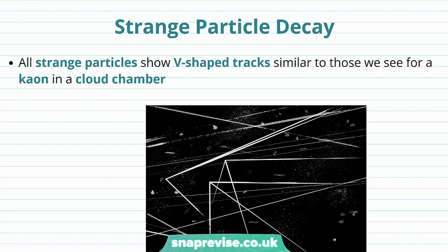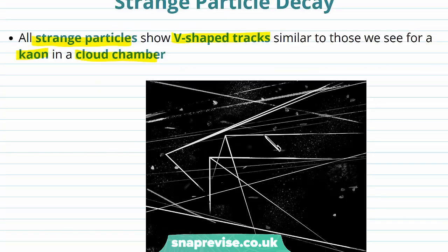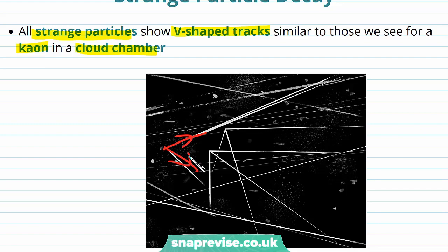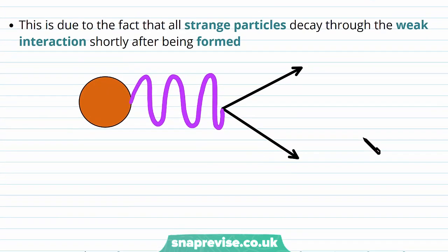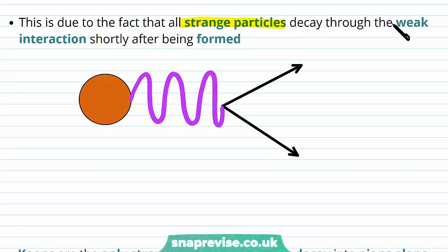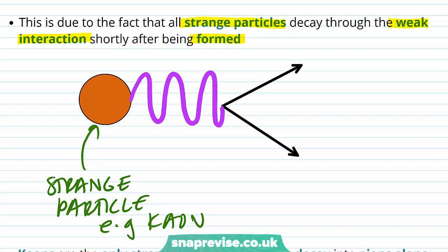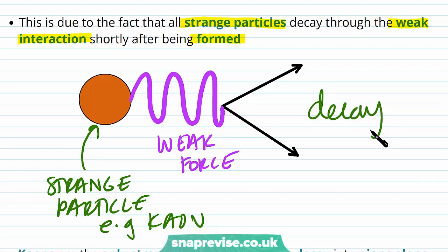Strange particles are formed via the strong force and then decay via the weak interaction. All strange particles show V-shaped tracks similar to those seen for a kaon in a cloud chamber. This is due to the fact that all strange particles decay through the weak interaction shortly after being formed, producing these characteristic V-shaped particle tracks.